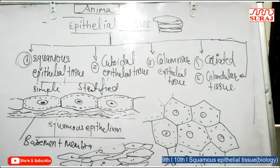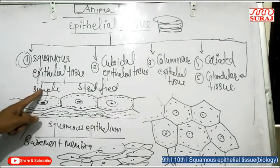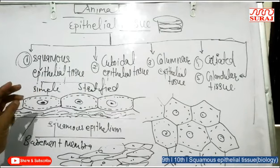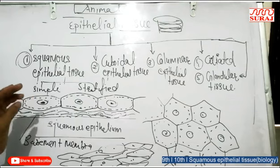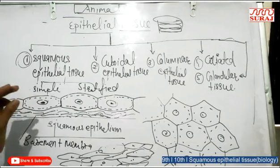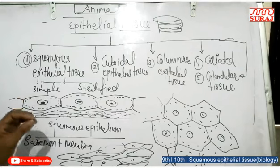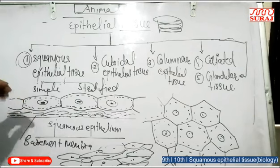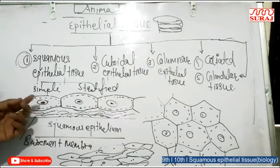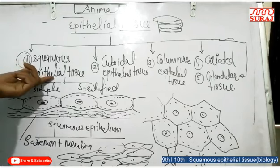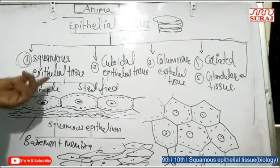The functions of squamous epithelial tissue: it helps in absorption, secretion, and exchange of coelomic fluid, as well as gaseous exchange. It also provides the skin and body protection from mechanical injury and prevents the entry of germs into the body.